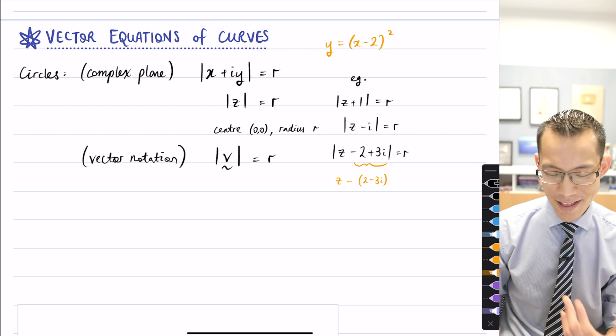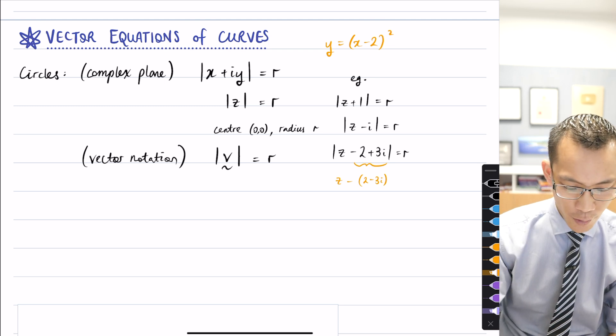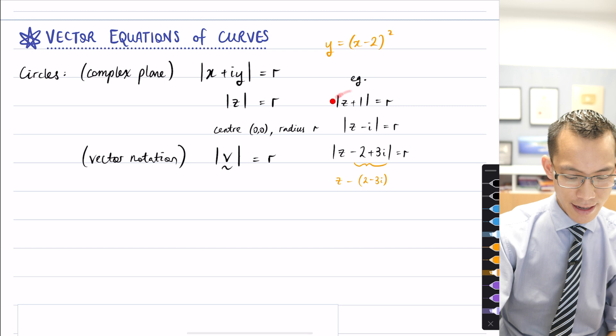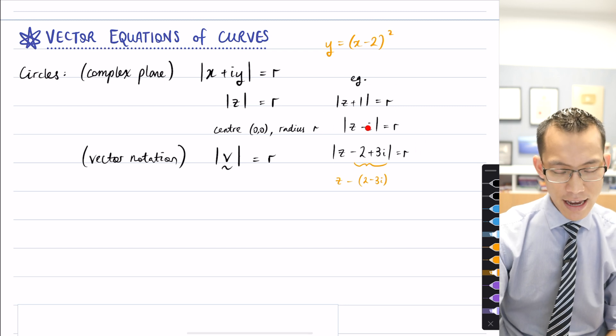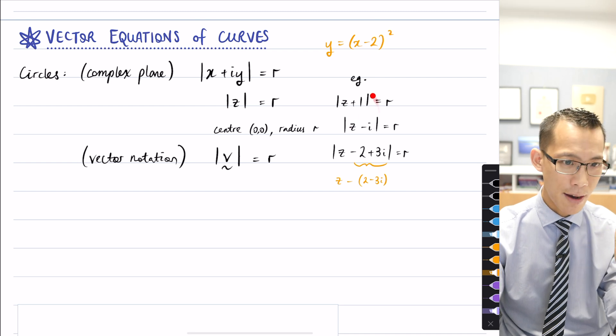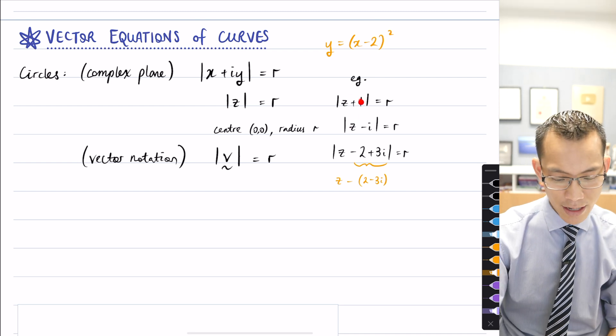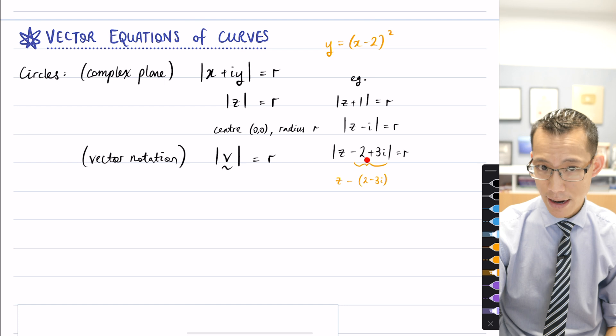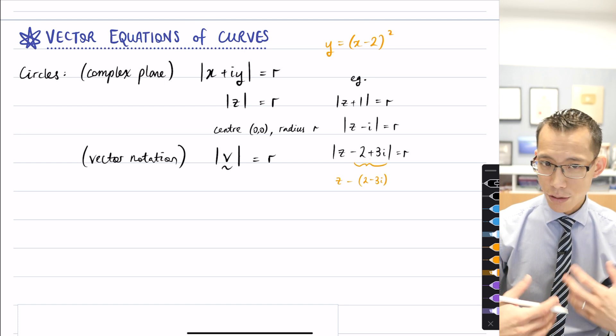If I wanted to move where the center was, it's just like what you saw before. If I were to try and generalize what you can see over here, it was z take away some complex number. And that complex number represented the center, whether it was negative 1 or i or 2 minus 3i.